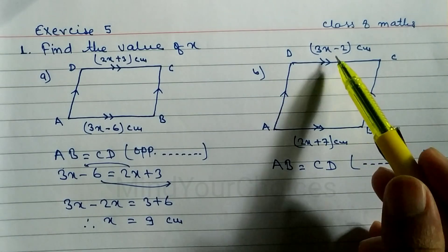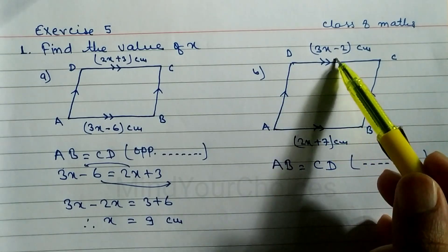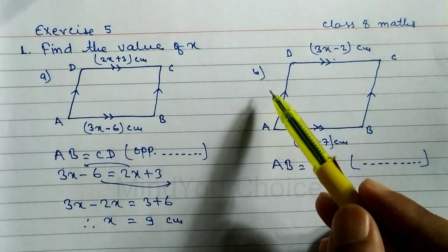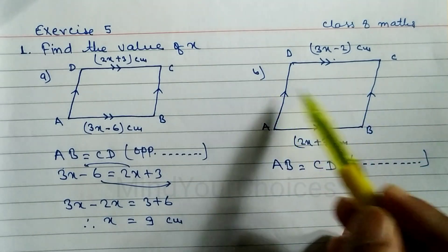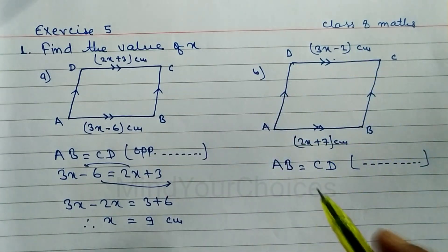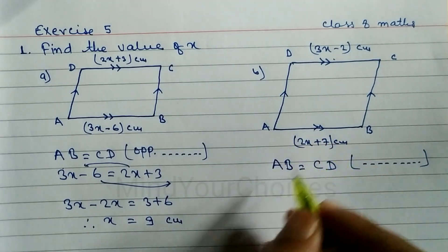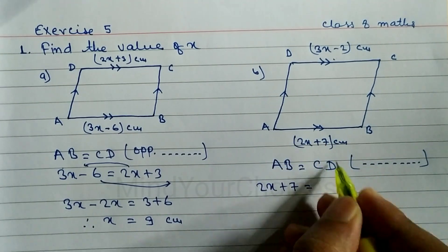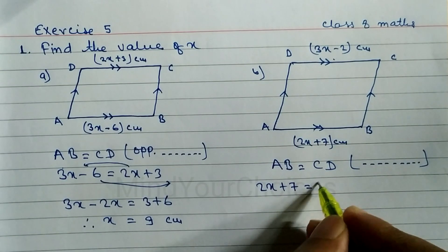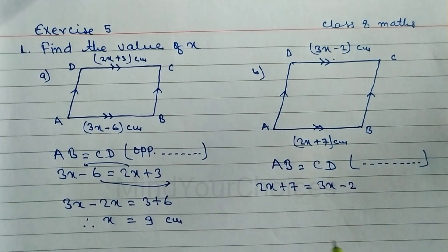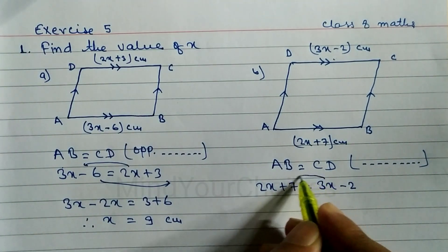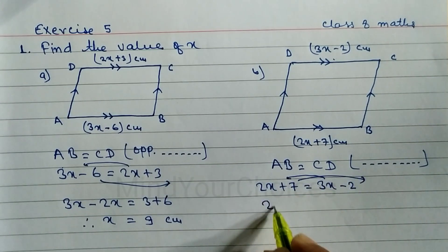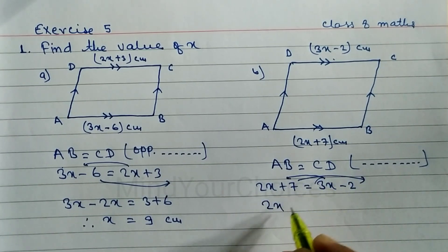AB and CD are equal because opposite sides of a parallelogram are equal, and AD and BC are equal too, but we don't need those since those side lengths aren't given. We only take AB and CD. The value of AB is 2x plus 7, and CD is 3x minus 2. Now we arrange: bring 3x to the left side and 7 to the right side.